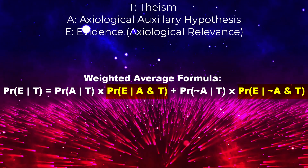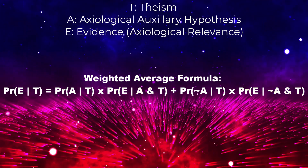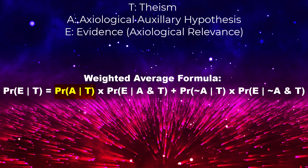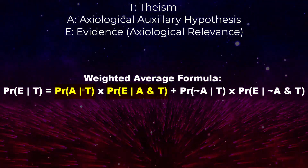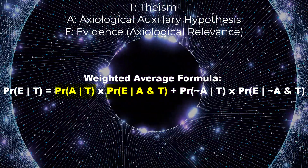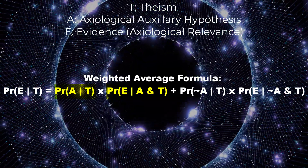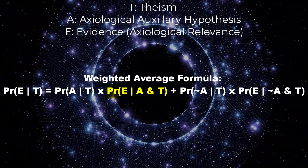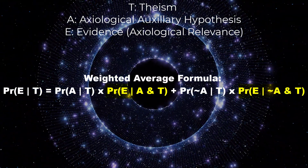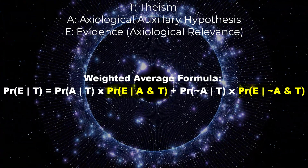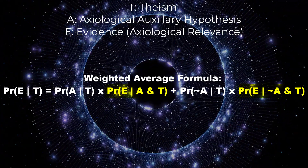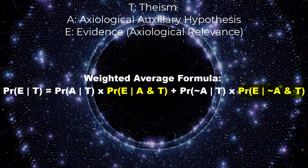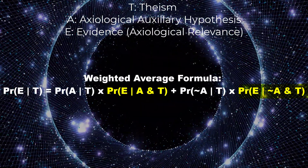Let's consider the scenario where the auxiliary hypothesis is not in tension with theism. In this case, the probability of A conditional on T is non-zero, indicating that the auxiliary hypothesis overlaps with theism. When P(E|A,T) is taken into account, it represents the probability of observing evidence E given both theism and the auxiliary hypothesis — in other words, we are following confirmational holism consistently. When the auxiliary hypothesis aligns with theism, P(E|A,T) is more likely to be higher compared to P(E|¬A,T), meaning that finding evidence E is more expected under the assumption that the auxiliary hypothesis is true. Therefore, when the auxiliary hypothesis is not in tension with theism, the weighted average principle does not decrease the probability of theism.